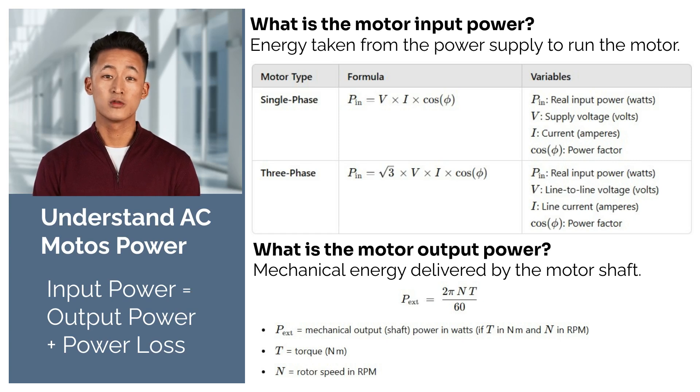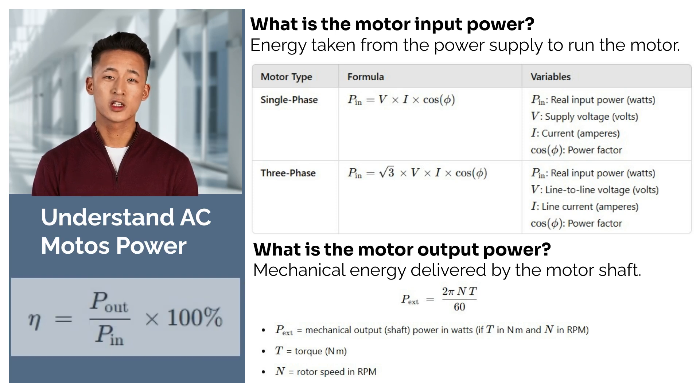If a motor is more efficient, it has less power loss, which means more of the input energy is used for useful work. Efficiency equals output power divided by input power times 100. Efficiency shows how well the motor converts input power into output power.